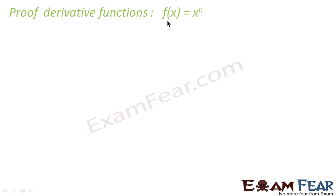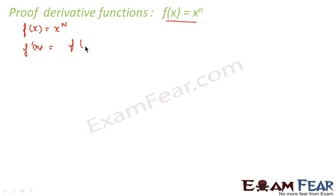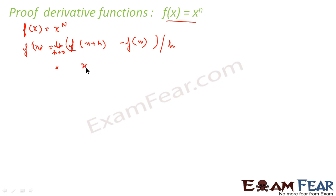So my f(x) is equal to x to the power n. I know the formula: f'(x), the derivative of x, is nothing but the limit of f(x+h) minus f(x), the whole thing divided by h, as h tends to 0. So f(x+h) is x+h to the power n, and f(x) is x to the power n.